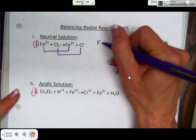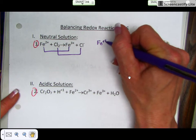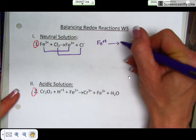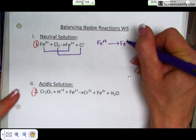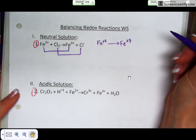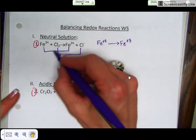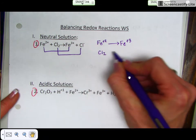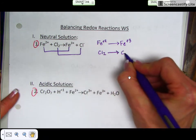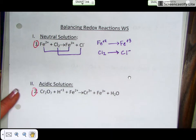So one half reaction is going to be Fe²⁺ changing to Fe³⁺. And the other half reaction involves chlorine Cl₂ changing to the chloride ion, Cl⁻.